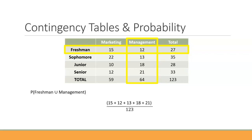Instead, think of it as adding together all the individual pieces: the 15 and the 12 from the freshman row, then working down the management column with 13, 18, and 21. We add all those pieces together for our numerator and divide by the grand total of 123 students. So 79 out of 123 is 0.64 — about a 64% chance the student is either a freshman or a management major.